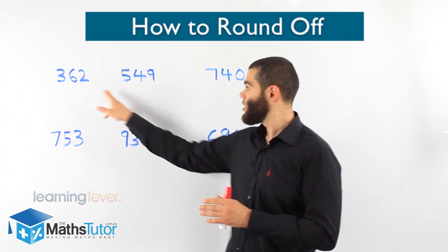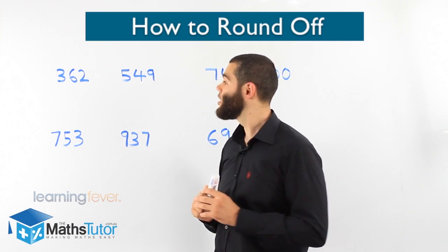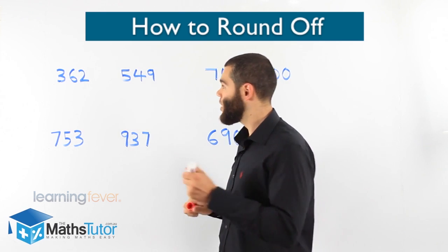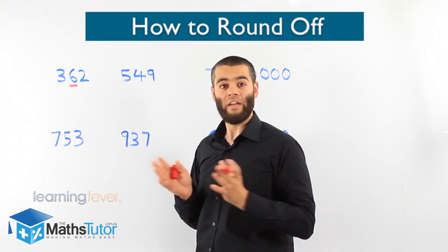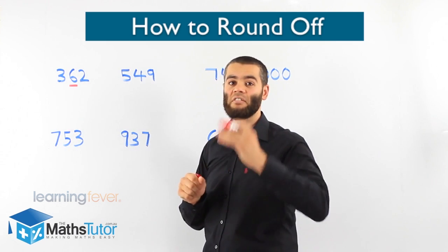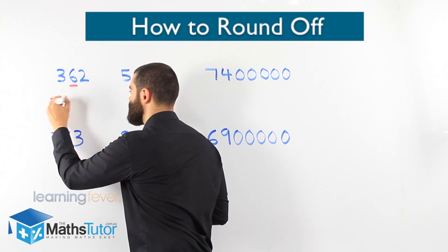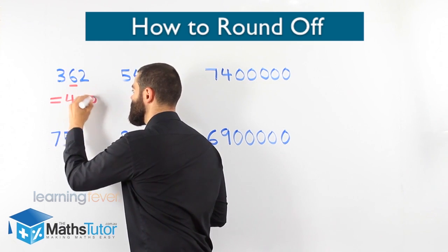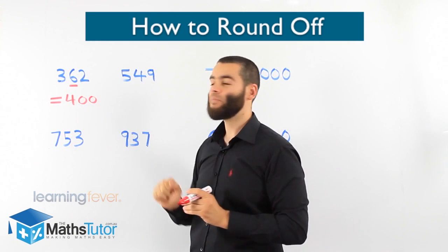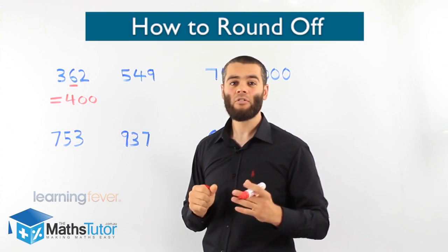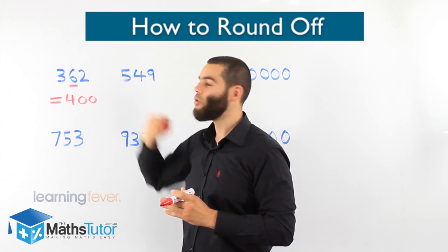Round off to the nearest hundred. Three hundred and sixty-two — where is the hundreds column? We look to the number on its right, which is six, and ask: are you five or more? Yes, because six is larger than five, so we round up. Our answer will be four hundred. The six had the muscles to push the three up and it became a four — four hundred. Three hundred and sixty-two rounded off to the nearest hundred becomes four hundred.